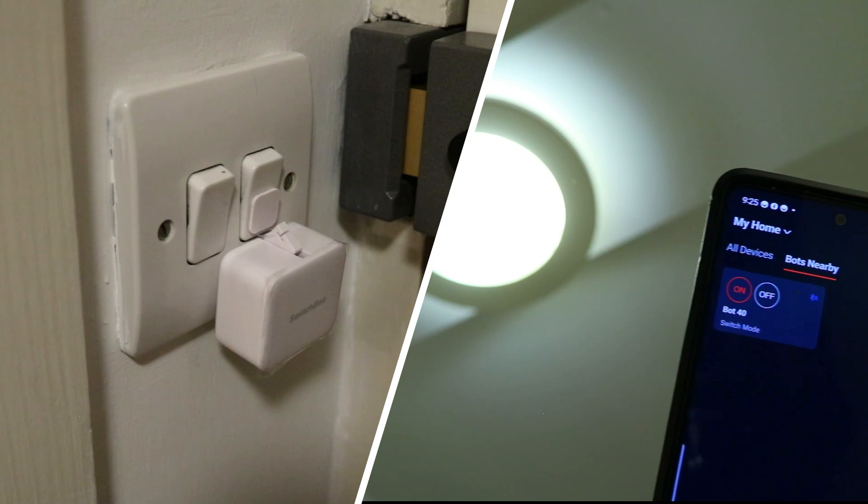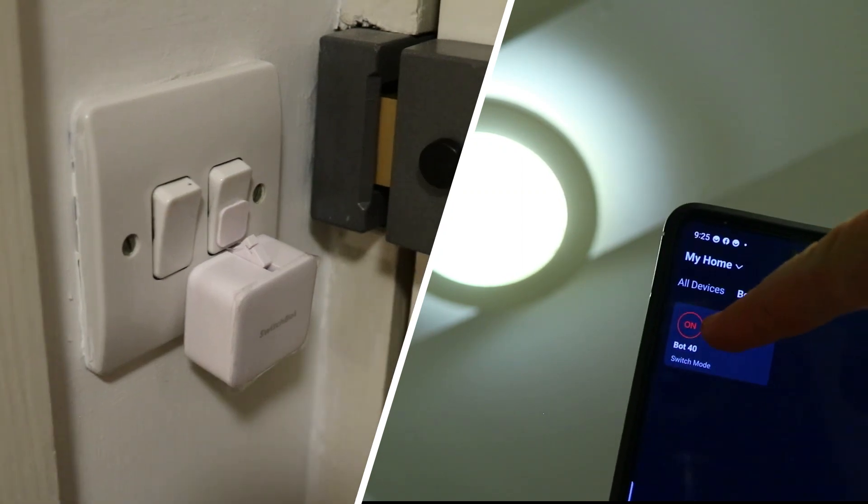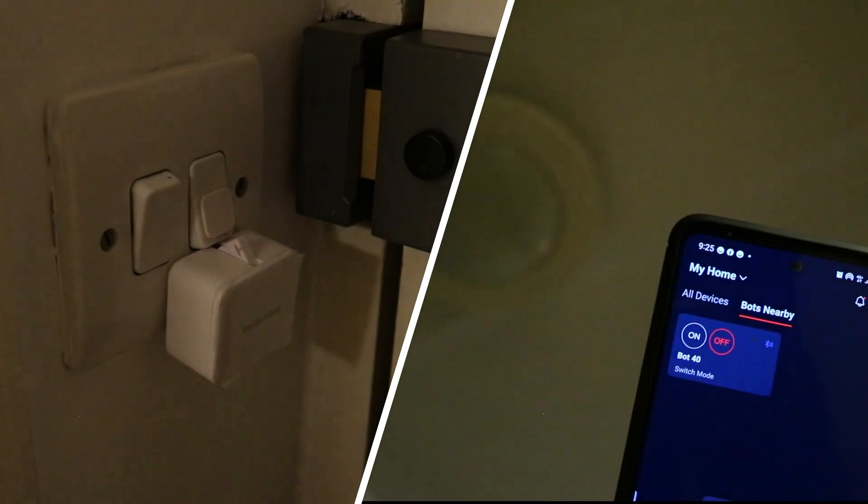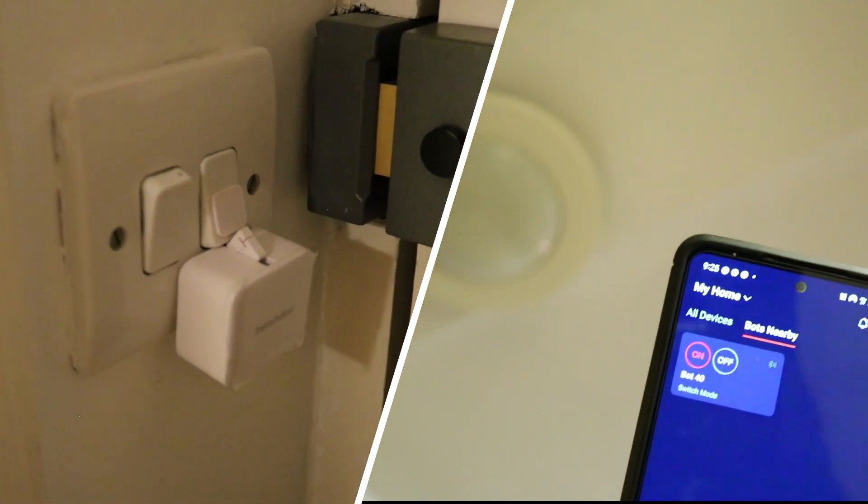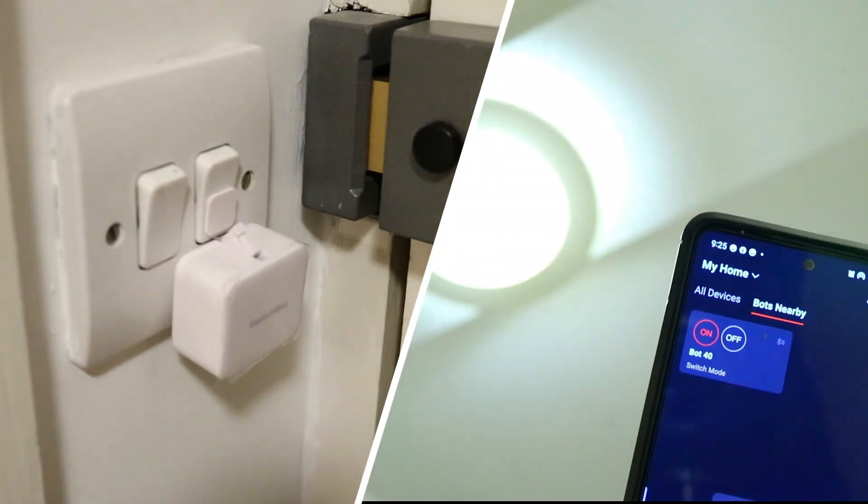So now the switch is all set up and it's connected to my phone. If I click the off button, it turns it off. And if I click it back on, it turns it on.